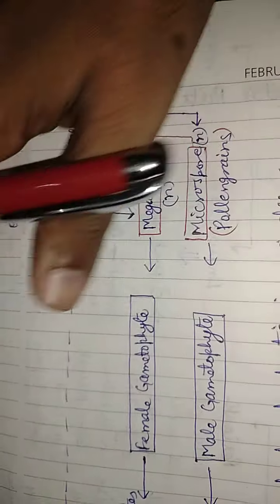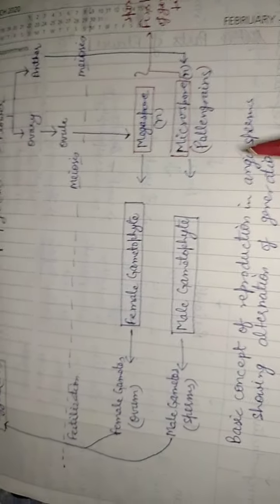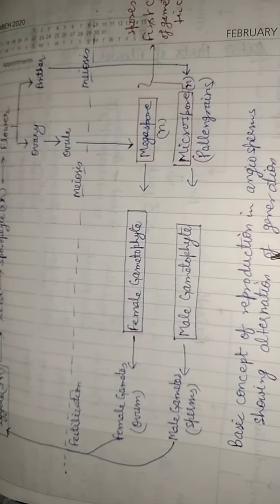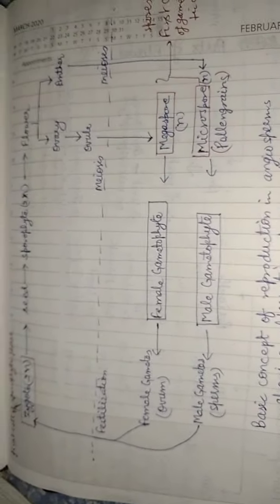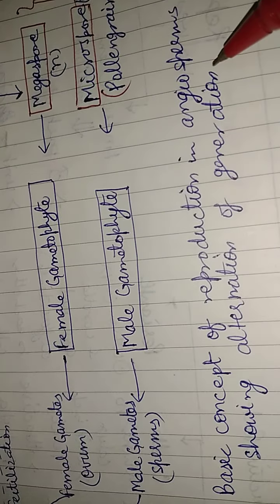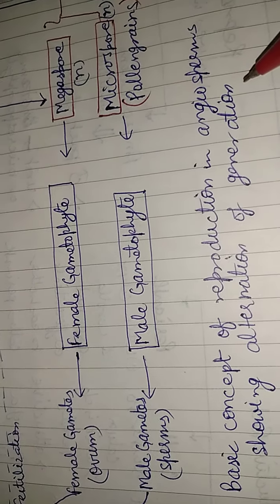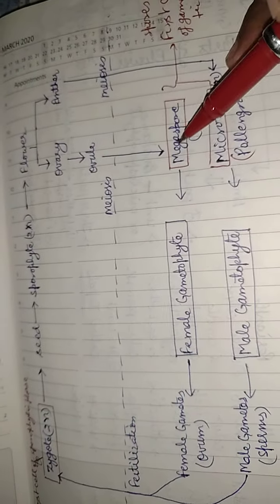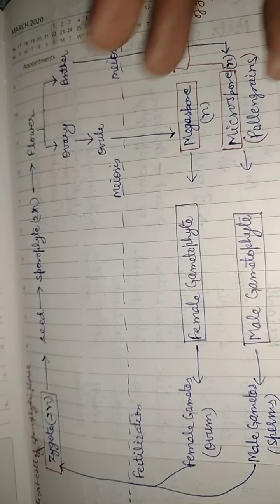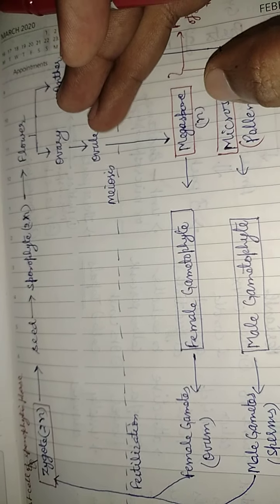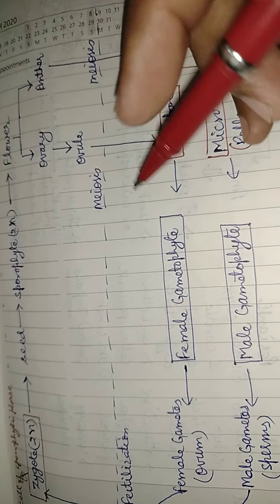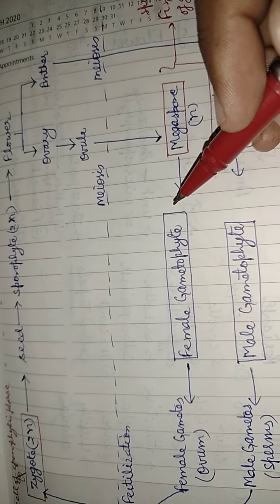Here a flowchart is given which clears the basic concept of reproduction in flowering plants or angiospermic plants, showing alternation of generation. When a life cycle contains two different phases — diploid and haploid — that come alternate to each other, it is called alternation of generation.